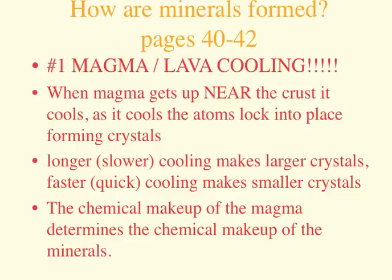The chemical makeup of the magma determines the chemical makeup of the minerals. It's kind of like when you make cake recipes — if you're making a chocolate cake recipe, the batter's chocolate and you're gonna get a chocolate cake; if you're making a yellow cake recipe, you're gonna get a yellow cake. But the number one way is magma or lava cooling.